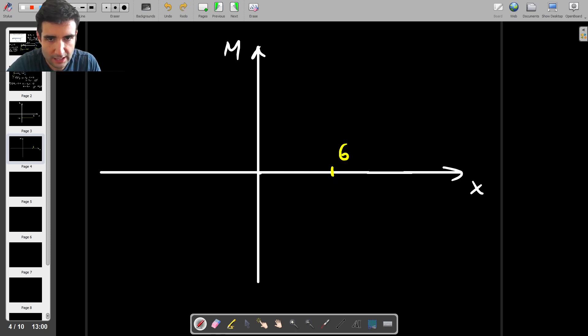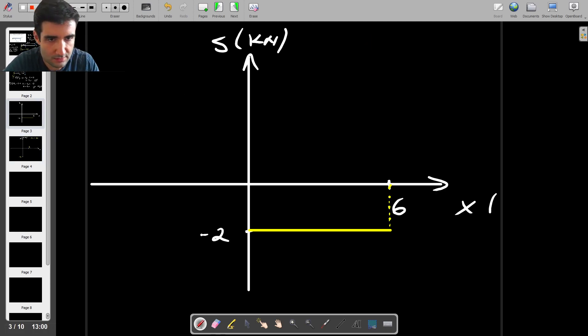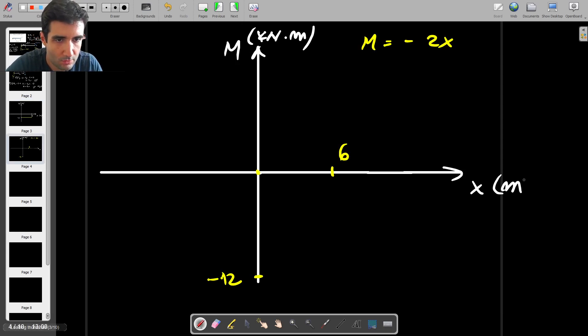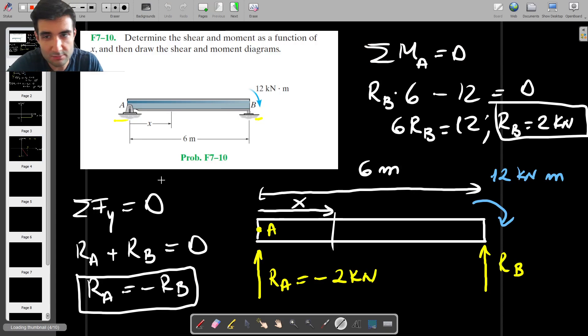When X is 0, the moment is 0. So when X is 6, the moment is minus 12. It's not really to scale, but you get the idea. So maybe I should put the units here as well. That's kilonewton meters, and then this is going to be kilonewtons here. And this is meters. So if we try to plot this, we just get a straight line with a gradient of minus 2, and that's what we get.